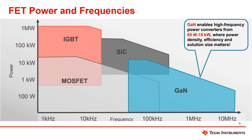This slide shows how GaN is able to operate at very high frequencies, a little past 10 megahertz. While there is some overlap between some of the different technologies, GaN has fundamental characteristics that make it a better fit for applications where high power density and speed are critical.